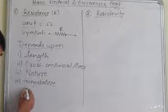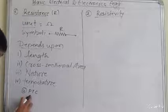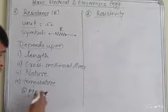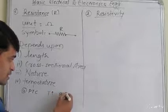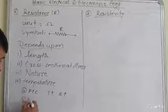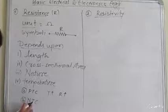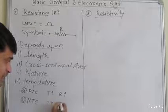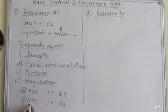The first one is PTC — PTC means positive temperature coefficient. That means when temperature increases, resistance also increases. The second one is NTC — NTC is negative temperature coefficient. When temperature increases, resistance decreases. Therefore, it is called negative temperature coefficient.